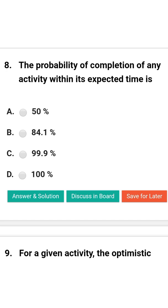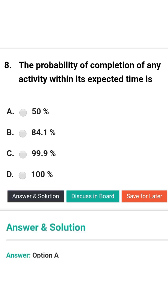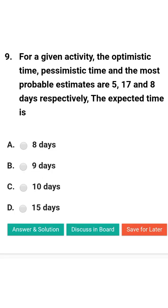Next question: The probability of completion of any activity within the expected time is — option A: 50%; option B: 84.11%; option C: 99.9%; option D: 100%. The correct answer is option A: 50%.